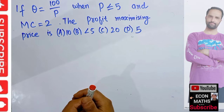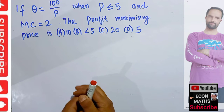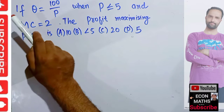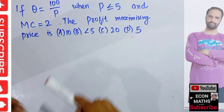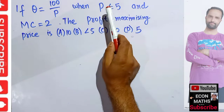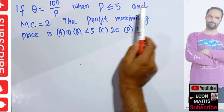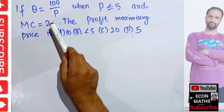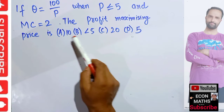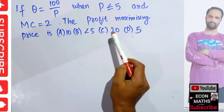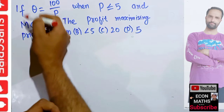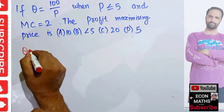In this video we will solve a problem that was asked by a brother on the Telegram channel of economics. The question is: if Q equals 100 divided by P, where Q is quantity and P is price, when price is less than or equal to $5, and marginal cost is $2, what is the profit-maximizing price? The options are $10, less than $5, $20, or $5.